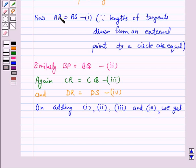AP plus BP plus CR plus DR is equal to AS plus BQ plus CQ plus DS.